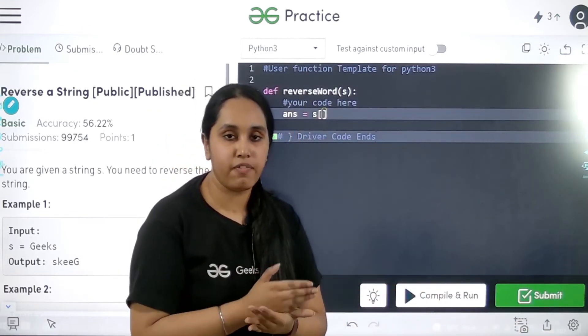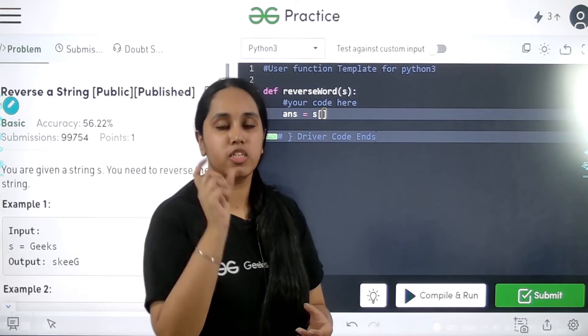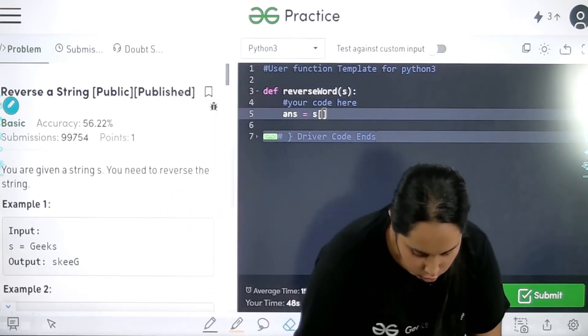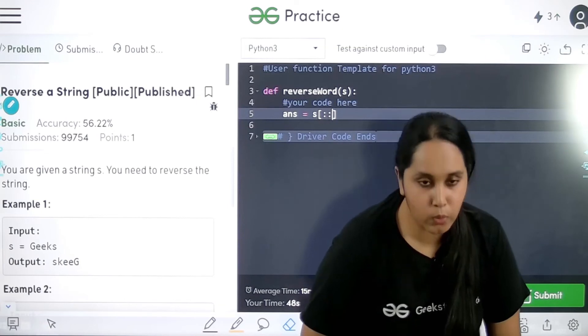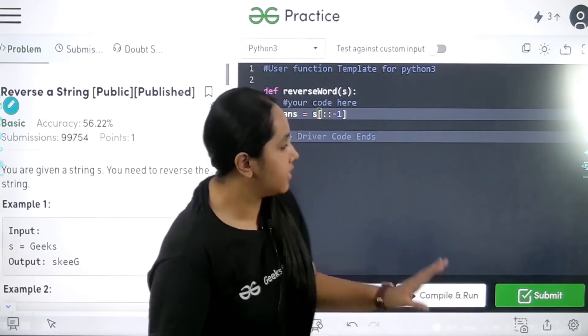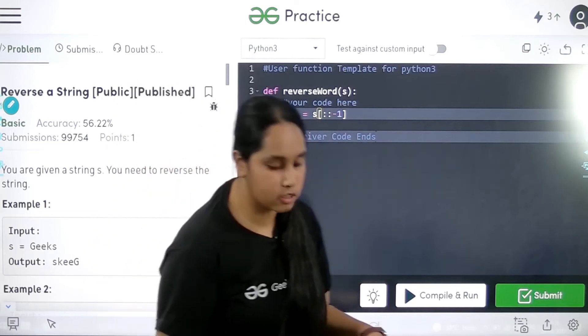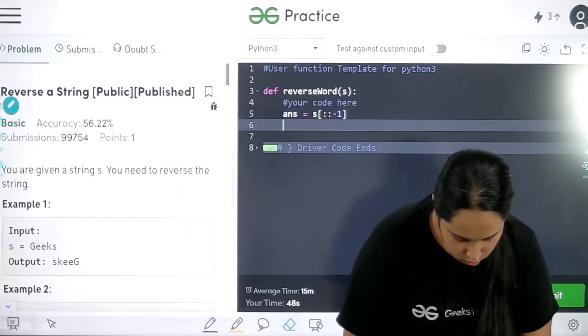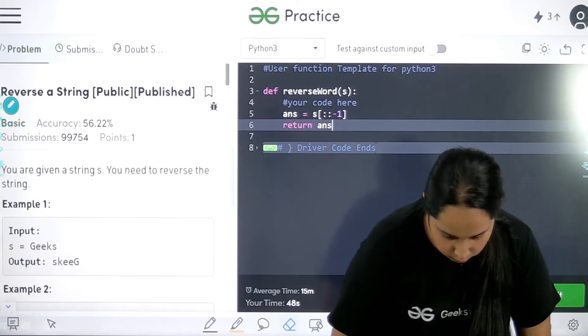I would leave the start value, the end value blank and I would just add the step value. So first colon blank, second colon blank and then minus 1 is the step value. Now my answer is stored in answer. So I just need to return with this. So return answer.